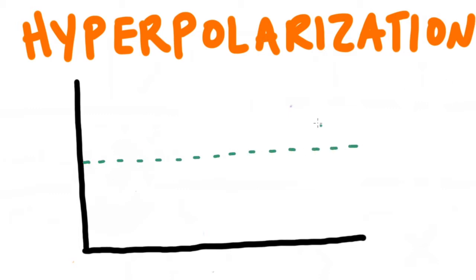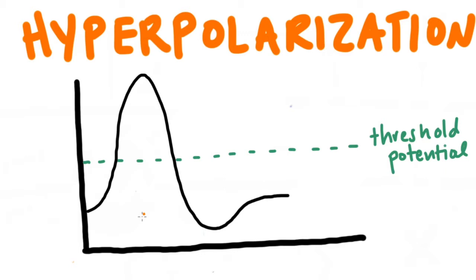Overall, the membrane potential becomes more negative, meaning a larger stimulus is required to reach the threshold and make the neuron fire.